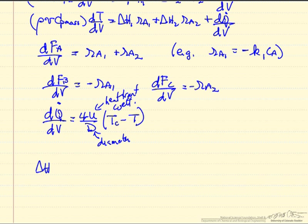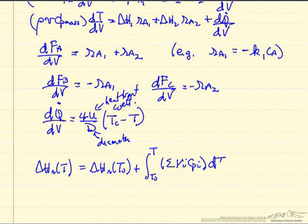One is that the heat reaction, which is at temperature T in this equation, in general can be a function of temperature, so with some reference temperature T0, and the integral of heat capacities from T0 to the temperature, the sum of the stoichiometric coefficients times the heat capacities integrated over temperature.